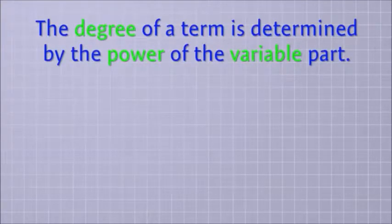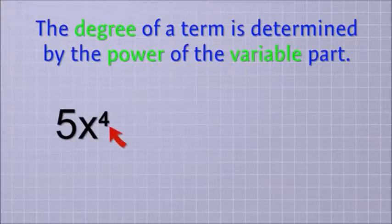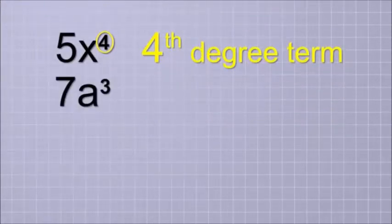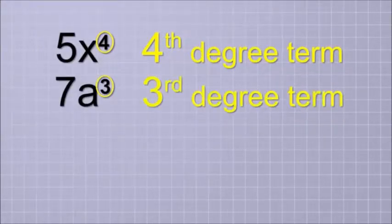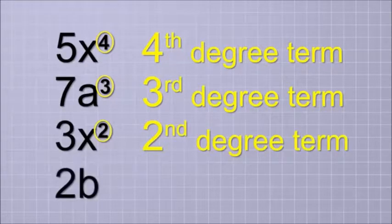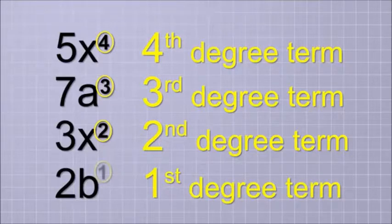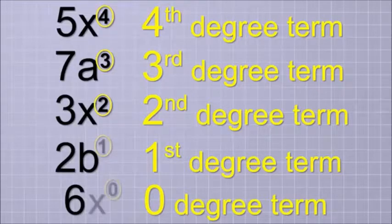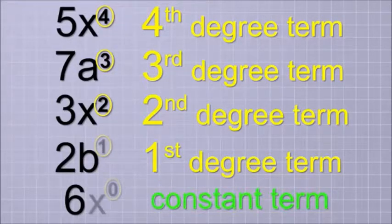For example, in this term, since the power of the variable is 4, we say that the degree of the term is 4, or that it's a 4th degree term. And in this term, the power of the variable is 3, so it's a 3rd degree term. Likewise, this would be a 2nd degree term and this would be a 1st degree term. Oh, and I suppose you could call a term with no variable part a 0 degree term, but it's usually just referred to as a constant term.